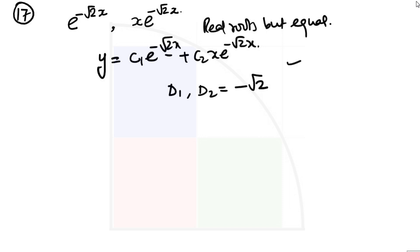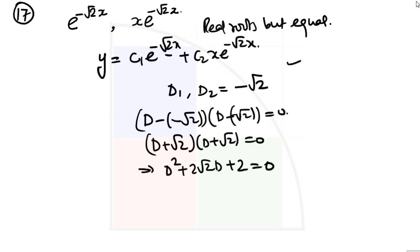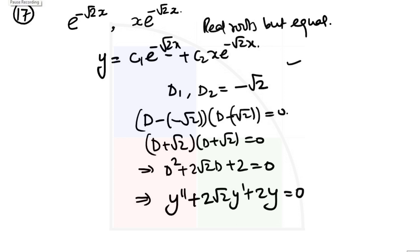This can be written as (D plus square root of 2) squared is equal to 0. Our equation will be y double prime plus 2 root 2 y prime plus 2y is equal to 0. So this will be the answer for this one. Let us move to the next question.